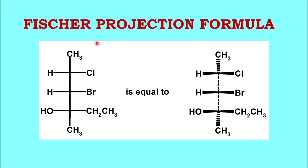Fischer projection formula: we can see that there are groups represented by horizontal and vertical bonds. The groups or bonds which are vertical are moving away from you or going into the plane of the paper, whereas the horizontal bonds are the groups coming towards you or out of the plane of the paper. This is the basic rule for Fischer projection formula. This formula is going to be very helpful in representing mostly small monosaccharide molecules in carbohydrates.